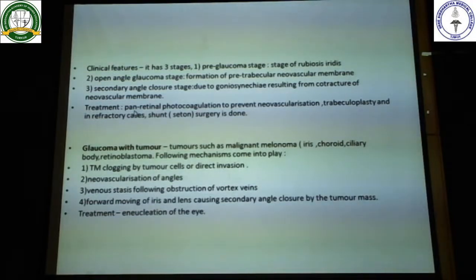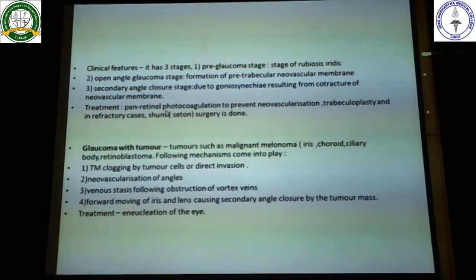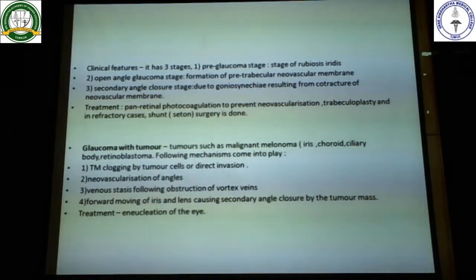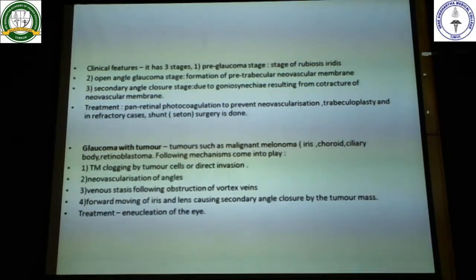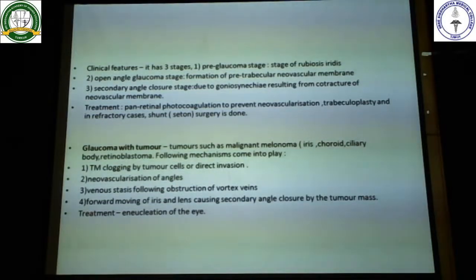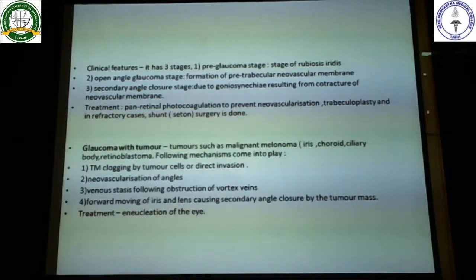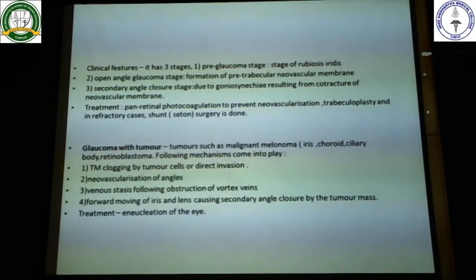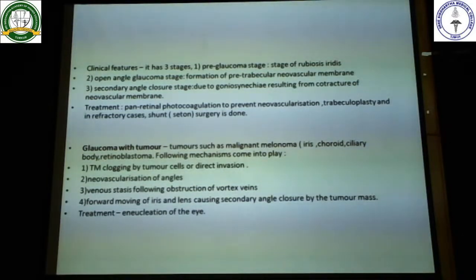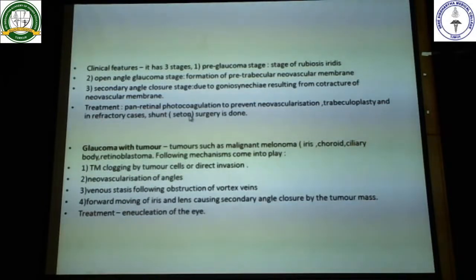So the main line of treatment in neovascular glaucoma is: until you take care of the new blood vessels there is no point going ahead with glaucoma treatment. You treat the retina by a procedure called panretinal photocoagulation - burning the retina so that the oxygen requirement becomes less, converting the hypoxic retina into an anoxic retina. This reduces secretion of vascular endothelial growth factors, causing the new blood vessels to eventually regress.